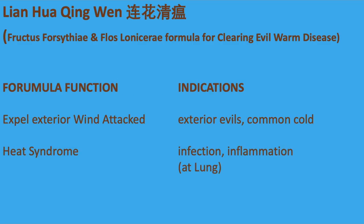Today, we are talking about a Chinese herbal formula, Lian Hua Qing Wan. Formula function: expel exterior wind attack, which is exterior evils and common cold, and also clear heat syndrome, which is infection and inflammation at the lung.